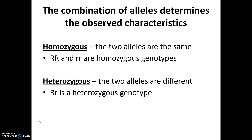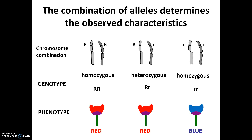Homozygous refers to a condition where the two alleles are the same — so big R big R and little r little r are homozygous genotypes. Heterozygous is when the alleles are different — big R little r. You'll notice that red flowers can either be homozygous dominant (big R big R) or heterozygous. Blue flowers are always homozygous recessive — little r little r.